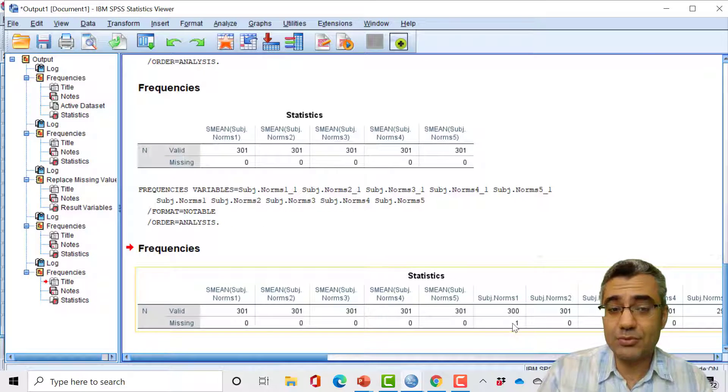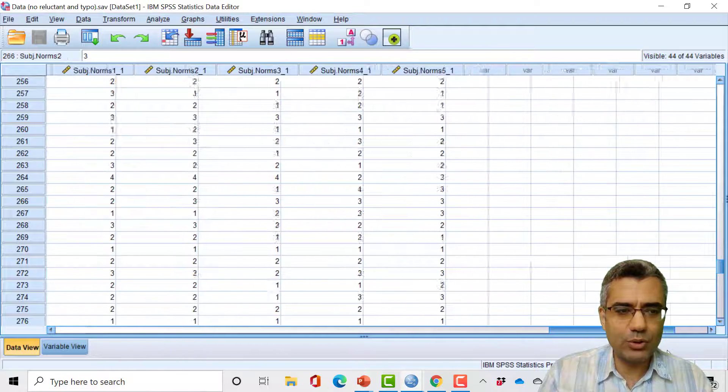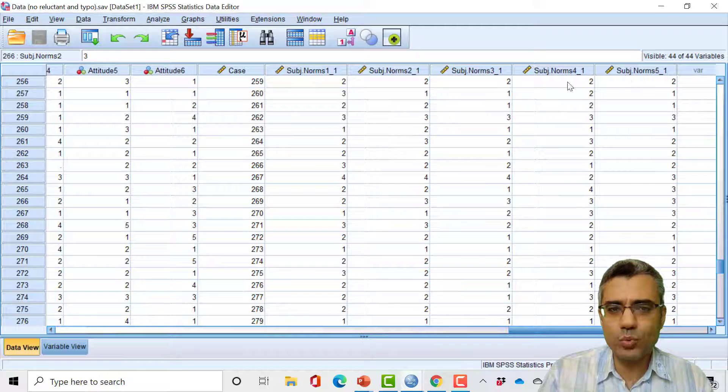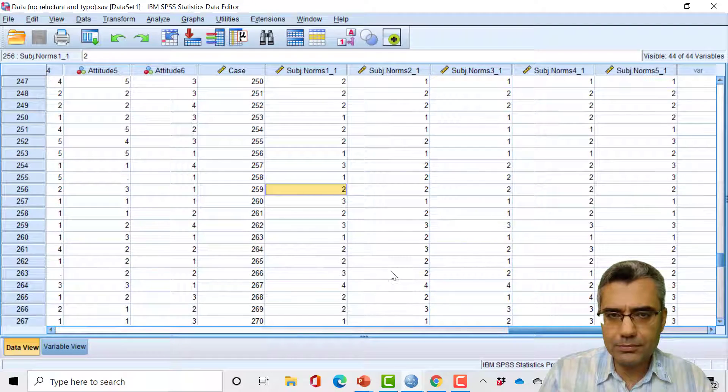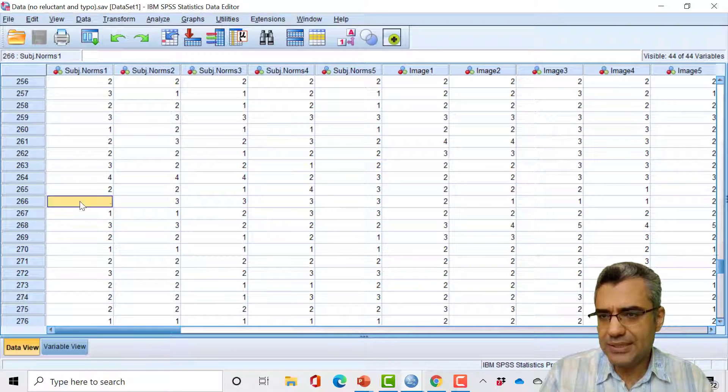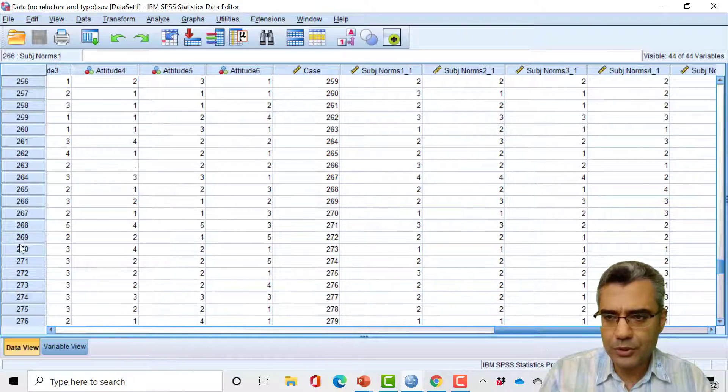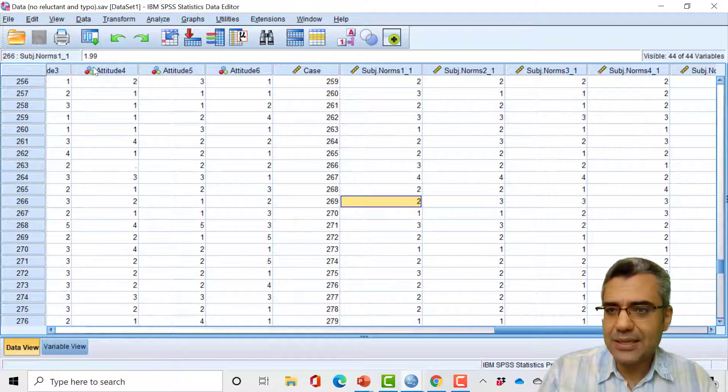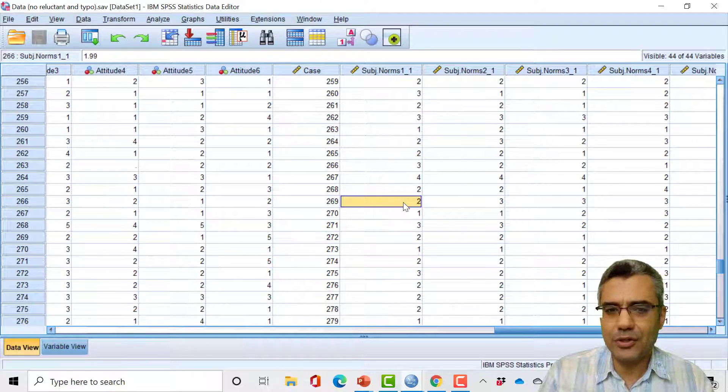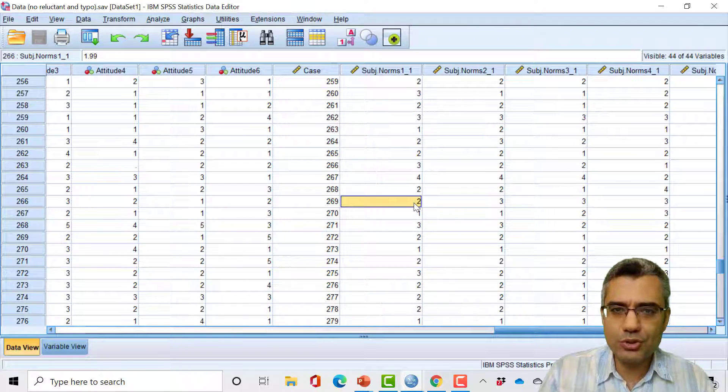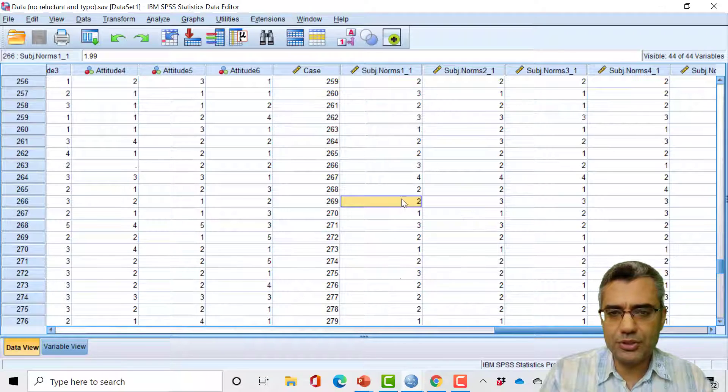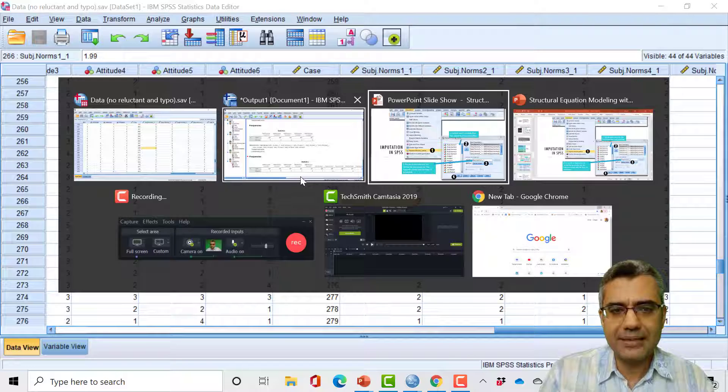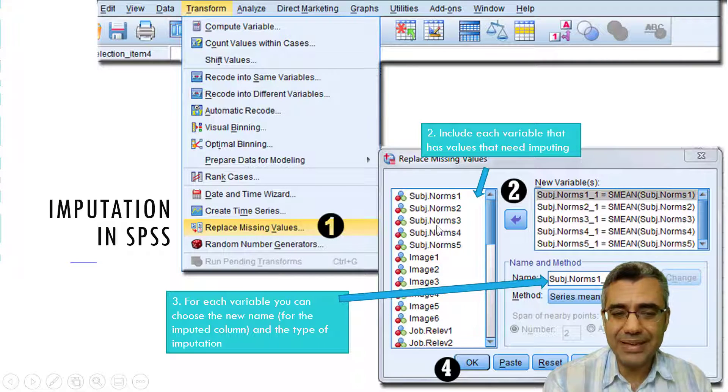You can compare with the original ones. The original subjective norm has one missing case, but the one that we made just now, no missing case because this missing case has been replaced with the mean. If I go to the right side of the data file, these five were just added. Case number 266 was the one with missing case, and there is no more missing case. The value is 1.99, this is the mean of the other cases, and it has been rounded to two. This is the way I usually handle the missing cases when I don't have many missing cases.